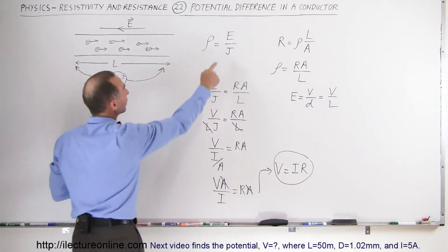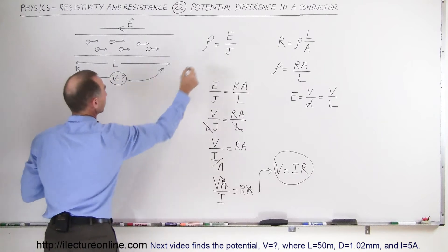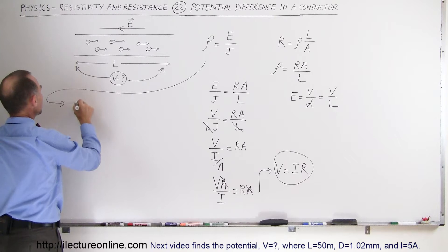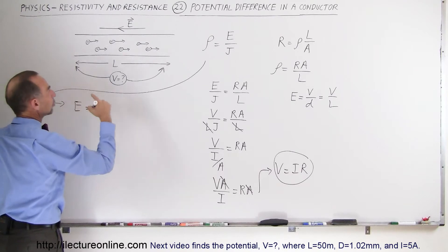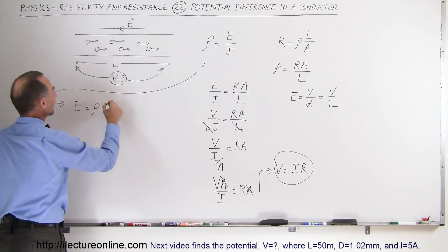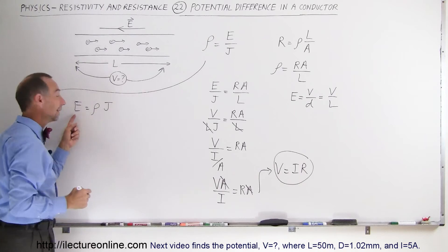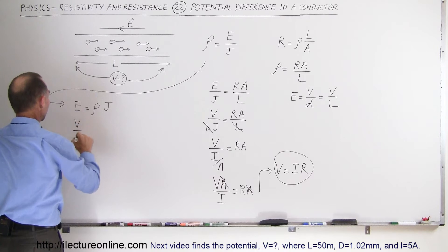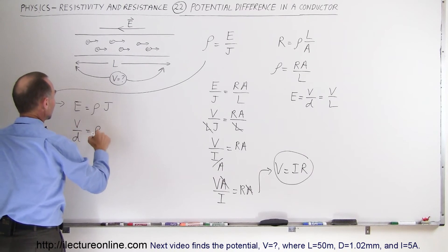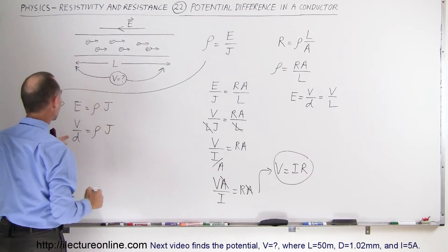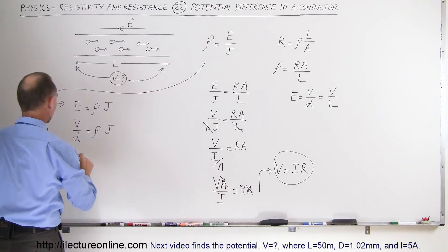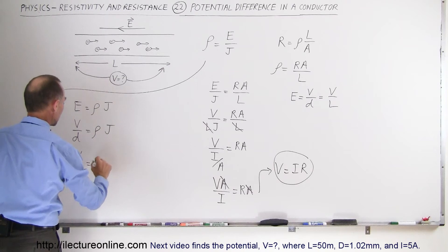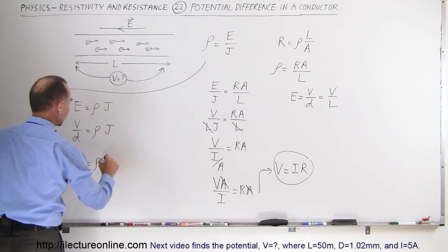What we can do instead is take this equation and write it as E, the electric field strength, is equal to the product of the resistivity times the current density. We know that the electric field can be written in terms of the voltage divided by the distance, and that equals the resistivity times the current density. In this case, the distance would be the length of the wire under consideration, so the potential difference divided by the length is equal to the resistivity times the current density.